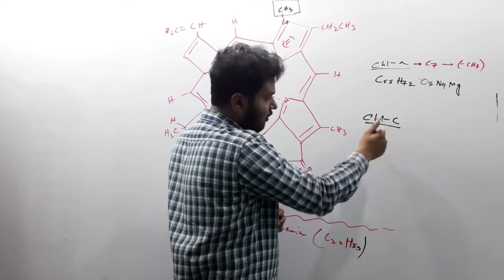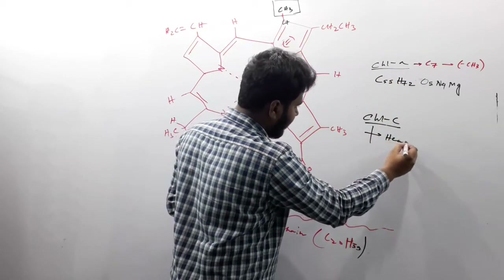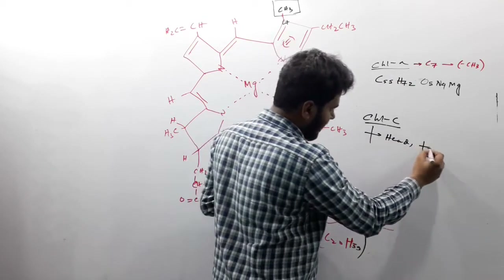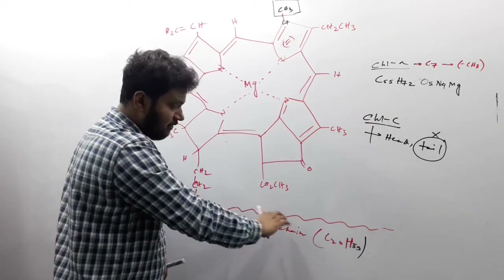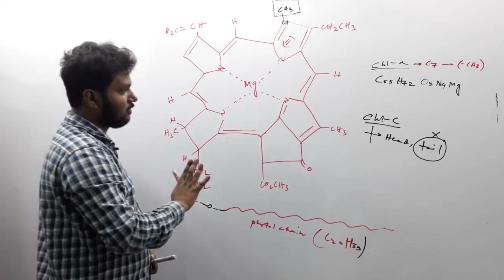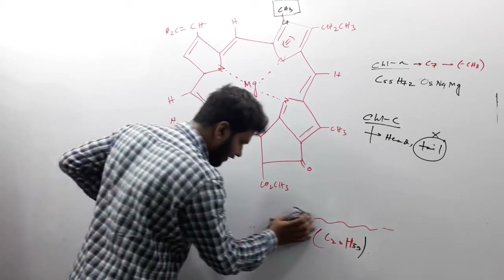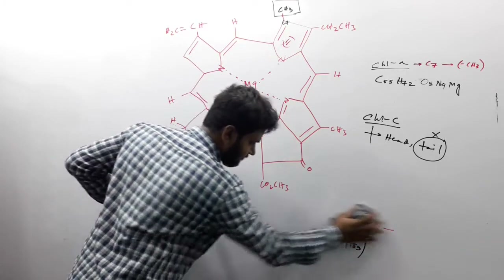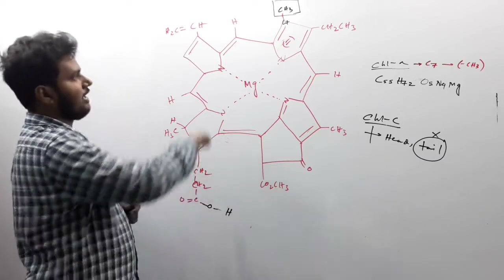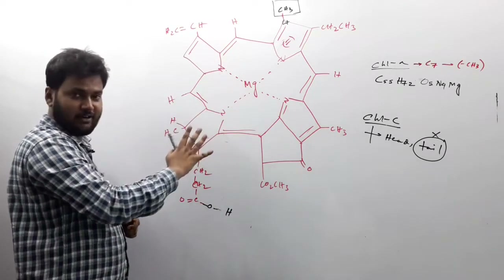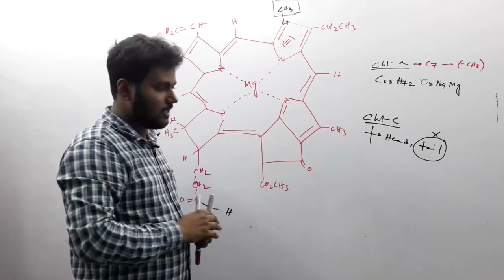In case of chlorophyll C, the chlorophyll A structure will have its head part remaining as it is, but the phytol tail will be totally absent. So to get the structure of chlorophyll C, we remove the tail part — the phytol chain. This will be the structure of chlorophyll C, obtained by removing the tail part from the chlorophyll A structure.